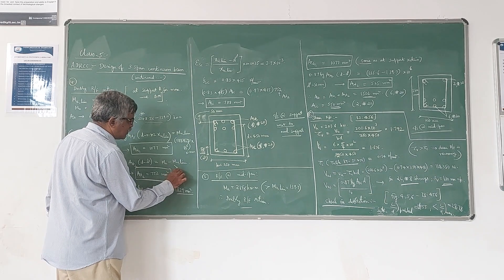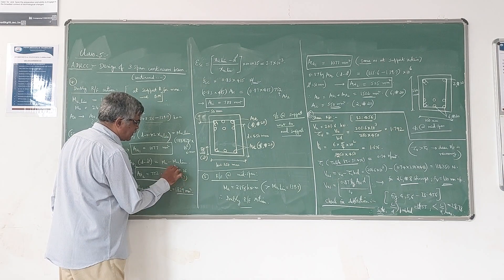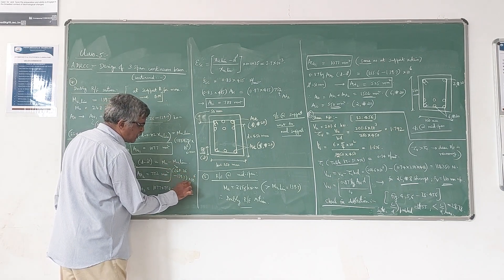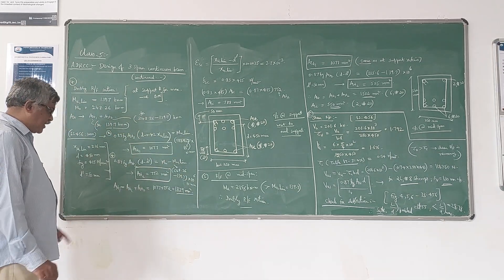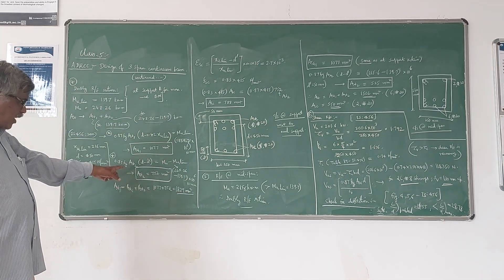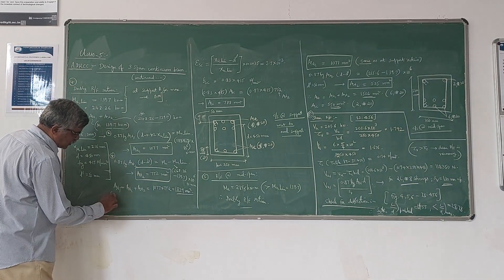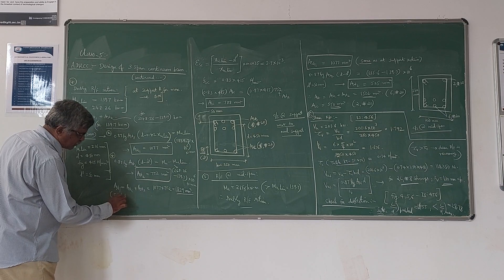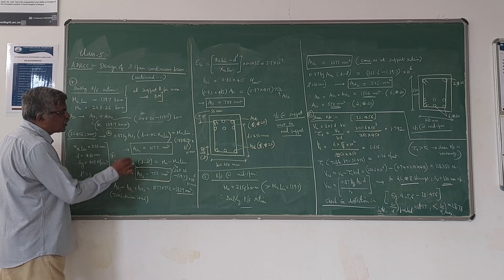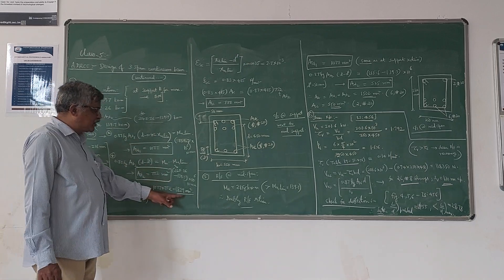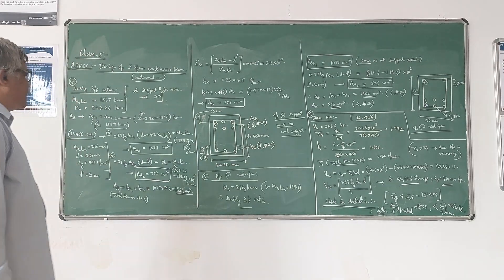Converting kNm to N·mm, if you simplify everything, you get AST2 = 752 mm². The total tension steel required is the sum of AST1 and AST2, which gives 1077 + 752 = 1829 mm².